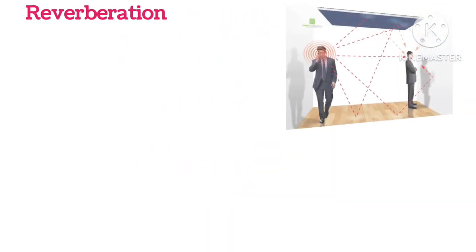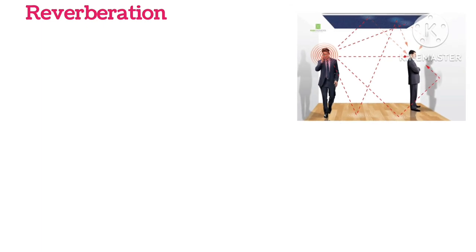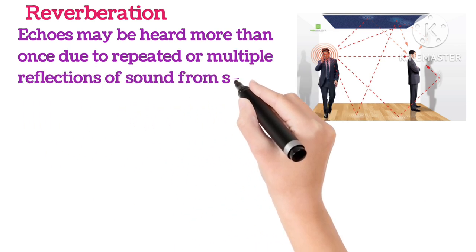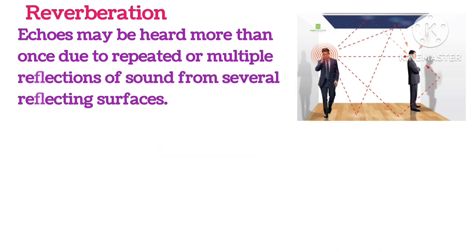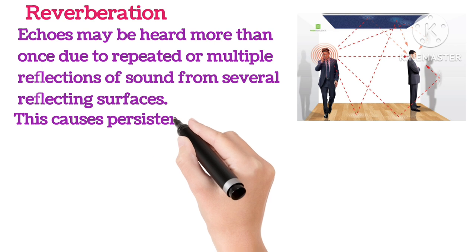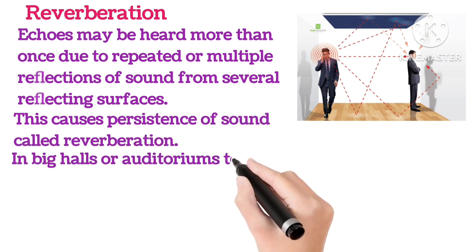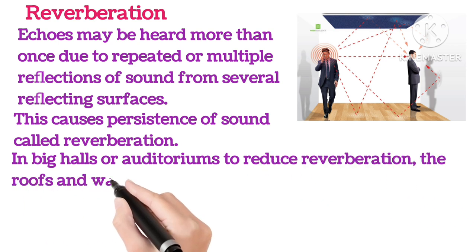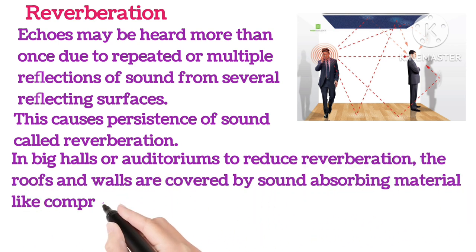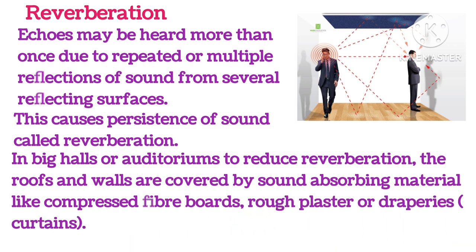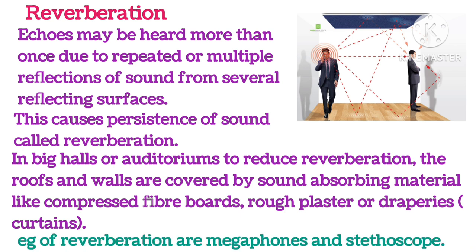Reverberation: Echoes may be heard more than once due to repeated or multiple reflections of sound from several reflecting surfaces. This causes a persistence of sound called reverberation. In big halls or auditoriums, to reduce reverberation, the roofs and walls are covered with sound-absorbing materials like compressed fibre boards, rough plaster, or draperies and curtains. Examples of devices using reverberation are the megaphone and stethoscope.